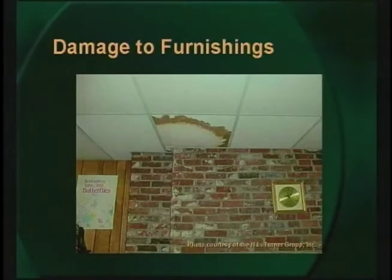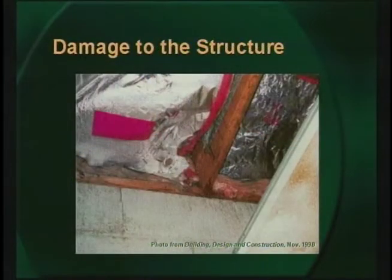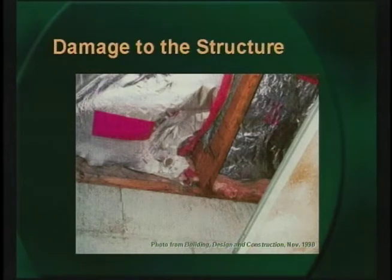In addition to the health issues, mold also prematurely deteriorates building furnishings and the structure. Common areas affected include the underside of wall coverings, ceiling tiles, and carpets. This photo shows a ceiling tile repeatedly exposed to moisture and as a result is now contaminated with fungi. It indicates a possible roof leak or an ongoing condensation problem above the ceiling, and the only remedy at this point is to replace the tile. Here's a photograph from another building with a history of condensation in the ceiling plenum area. Notice the discolored ceiling tile and the deteriorated wood framing. The condensation in this case was not the result of insufficient insulation, but rather the lack of a suitable vapor retarder on the warm side of the insulation and walls.